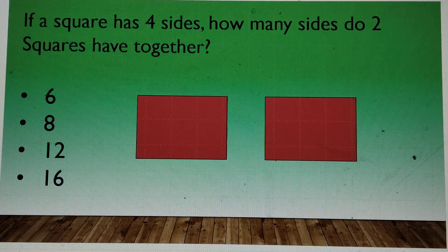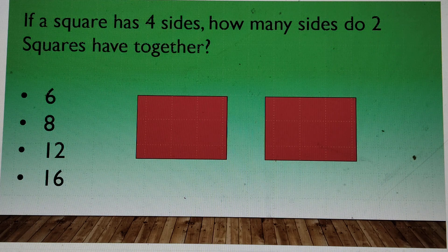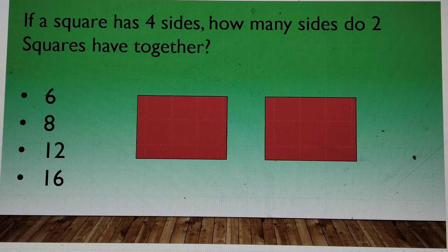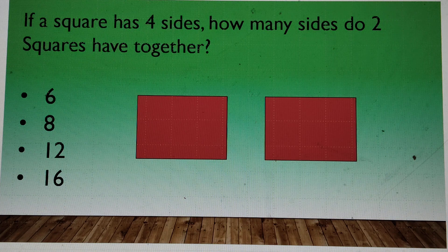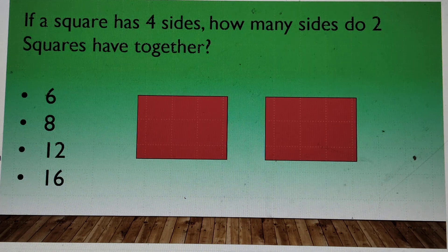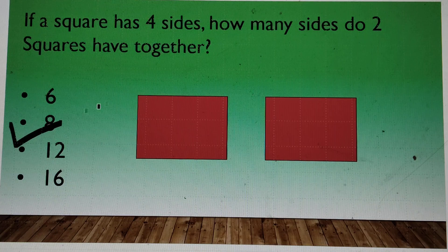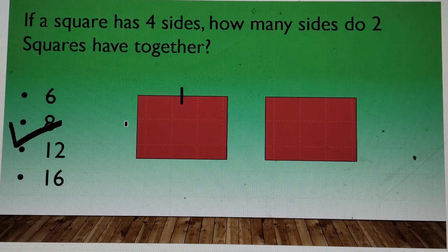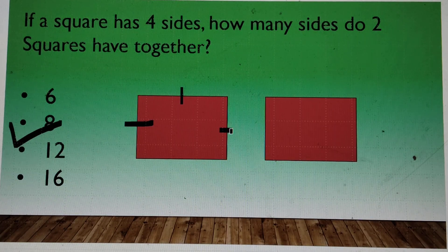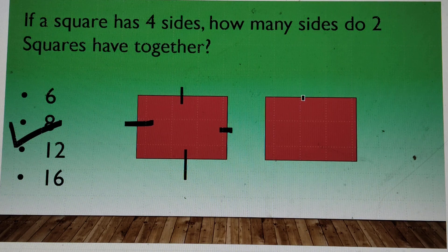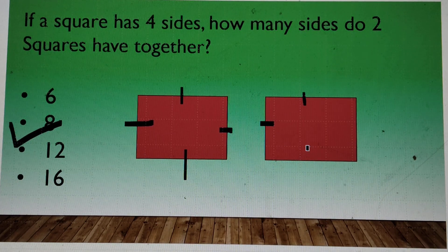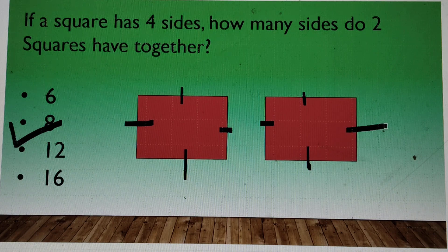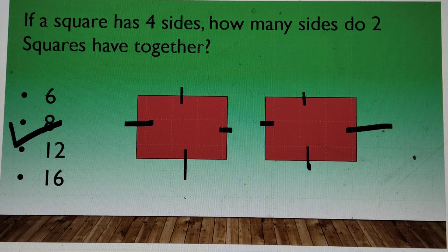Now if a square has 4 sides, how many sides do 2 squares have? 6, 8, 12 or 16? 8. Correct answer is 8. Let's count. 1, 2, 3, 4, 5, this is 6, 7 and this is the 8th one. So answer is 8.